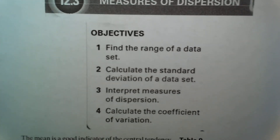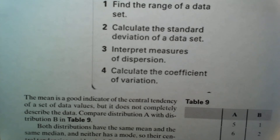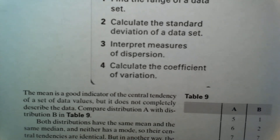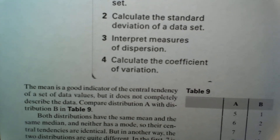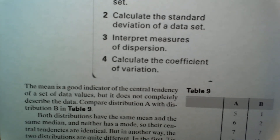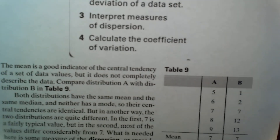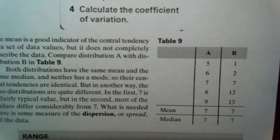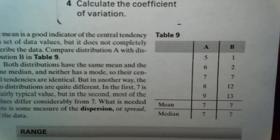As we learned, the mean is a good indication of the central tendency of a set of data values — what number would be representative of the whole data set. But it does not necessarily completely describe the data. Looking at table three, we have two data sets, A and B, with the same mean and even the same median, and yet data set B is more spread out, or has a greater dispersion, than data set A.